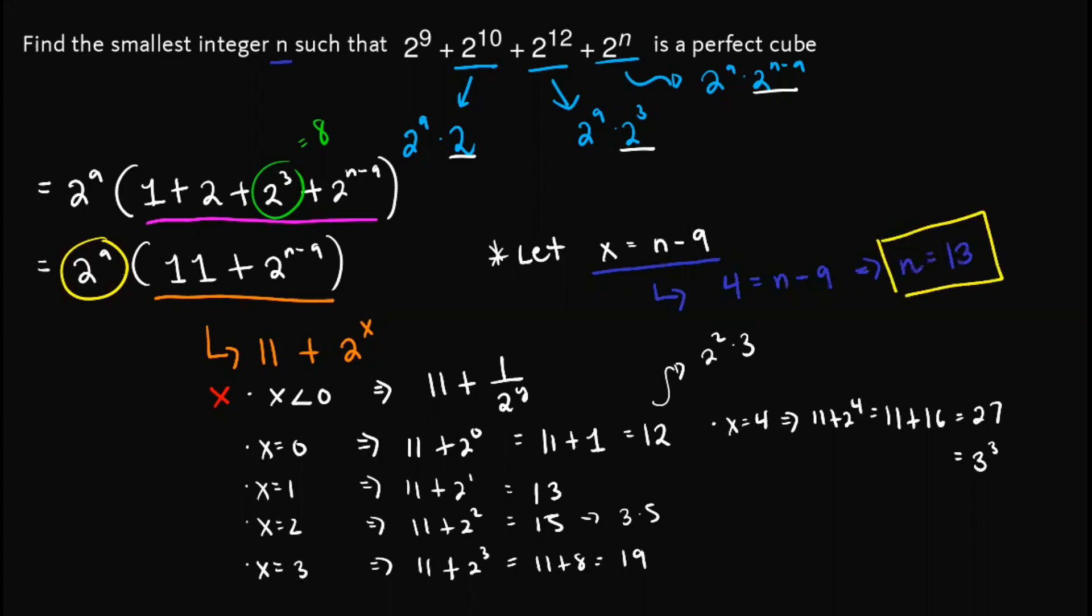So that is how we solve this problem. Note that we are sure that x is the least positive integer n out here since we have tried all the possibilities before it and we have shown that none of those numbers before it can make this one a perfect cube.